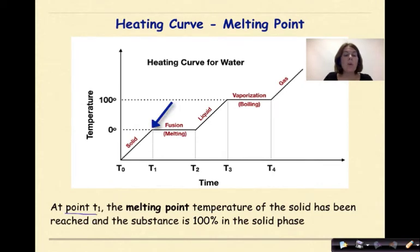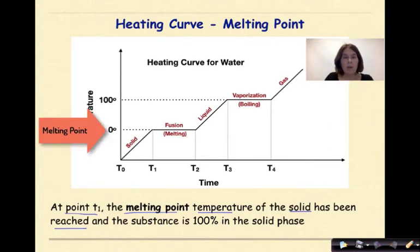At point T1, the melting point temperature of the solid has been reached, which we can see here on the graph. And the substance is still 100% in the solid phase. Right at the melting point, right exactly at T1, everything is solid and there is no liquid whatsoever.